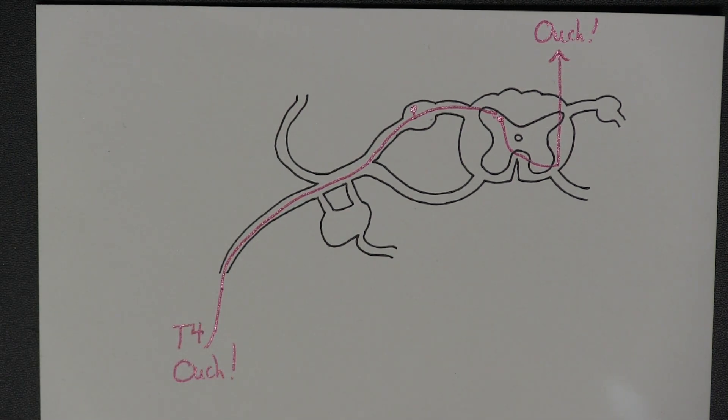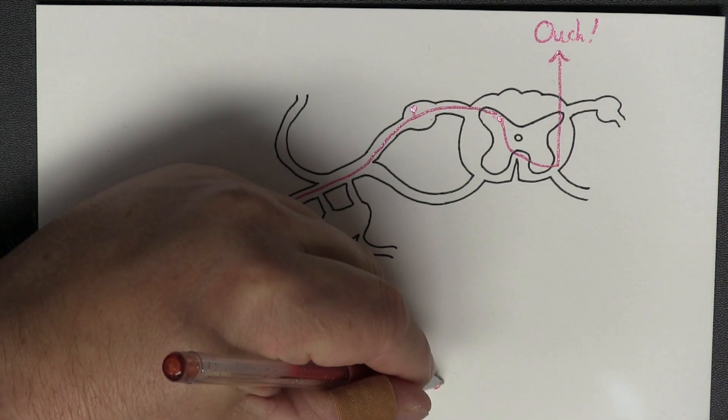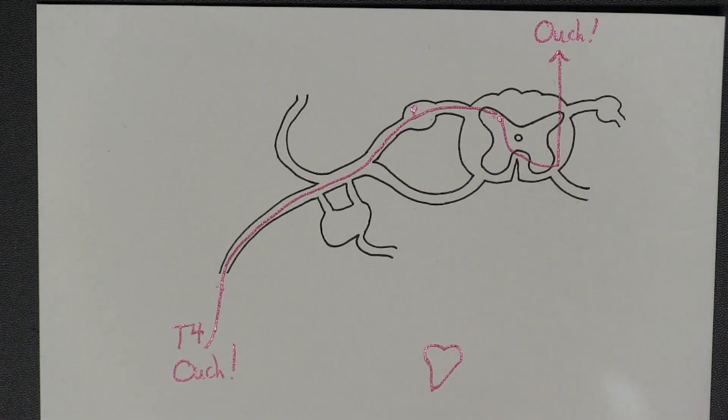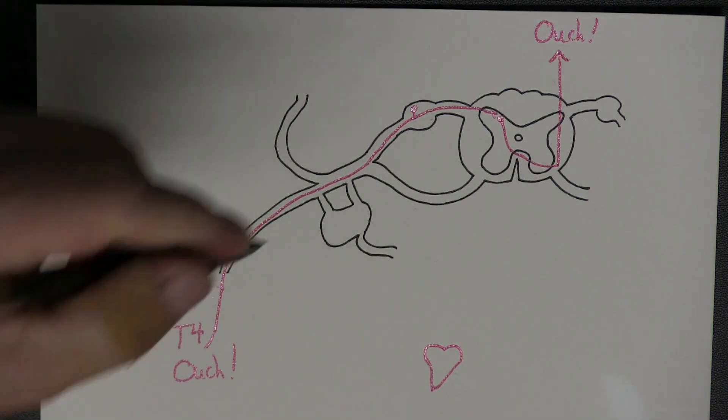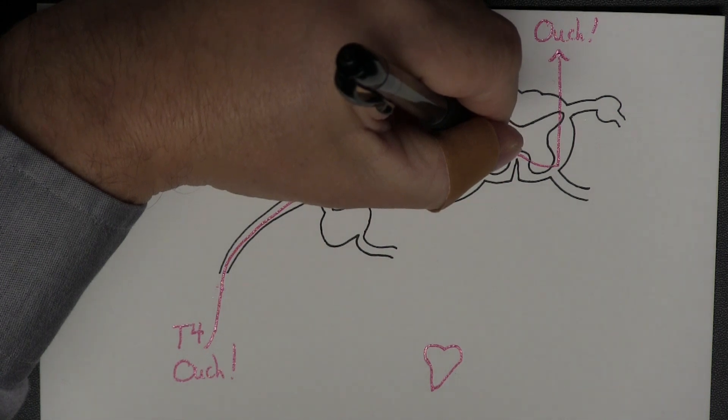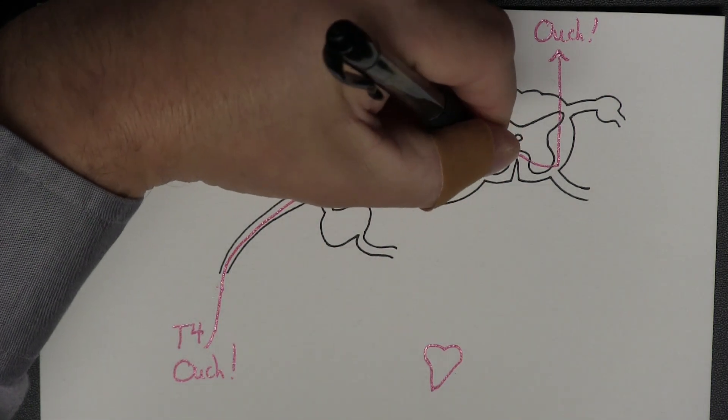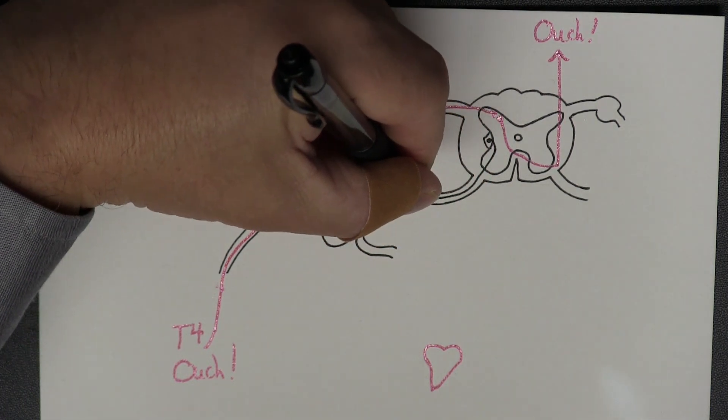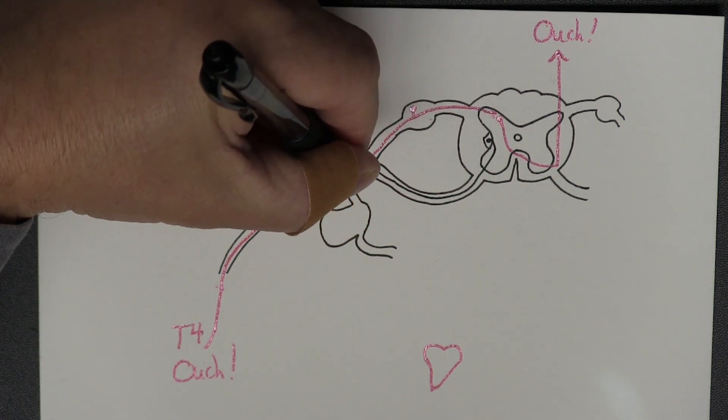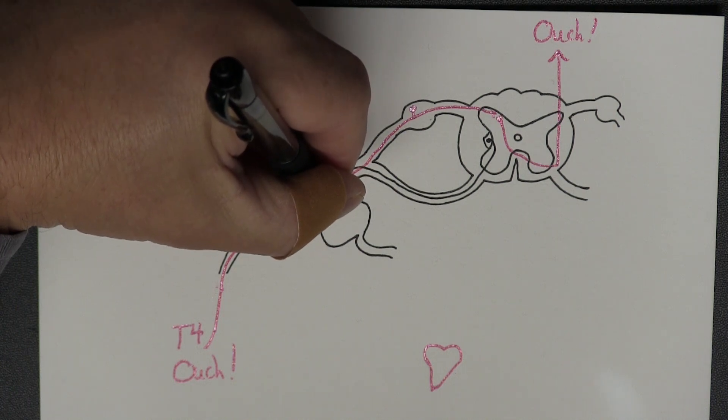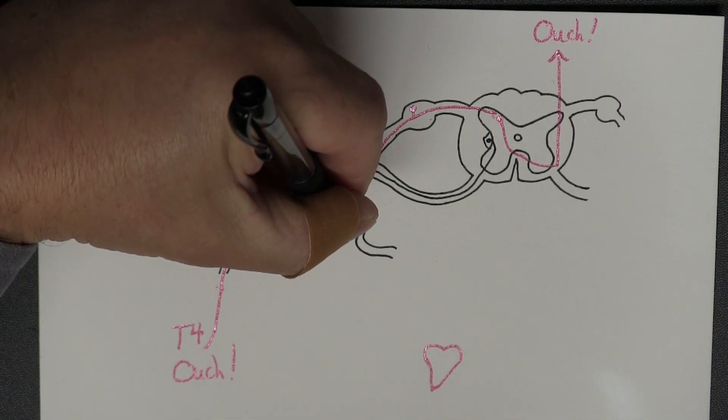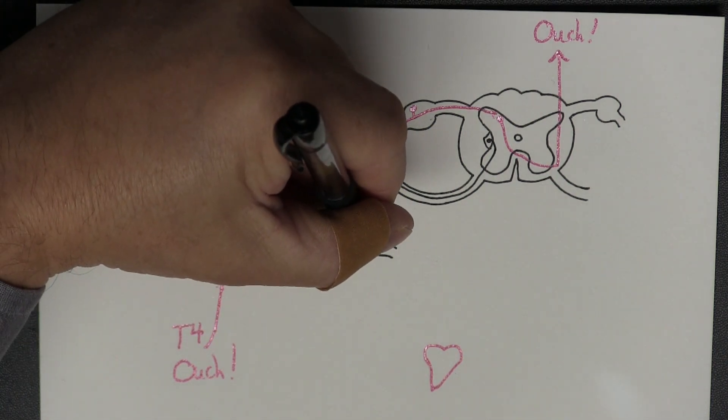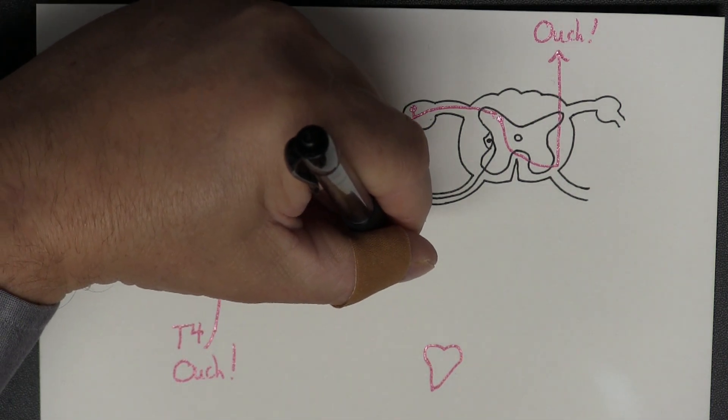Now the heart receives its sympathetic innervation from roughly the T1 to T5 sympathetic nerves. Those are coming from the intermediolateral cell column. Pre-ganglionic sympathetics are going to be traveling through the anterior root into the spinal nerve, they're going to jump onto a white ramus communicans, and in the case of the heart, they'll synapse in here, and the cardiopulmonary splanchnic nerves will take the sympathetics to the heart.